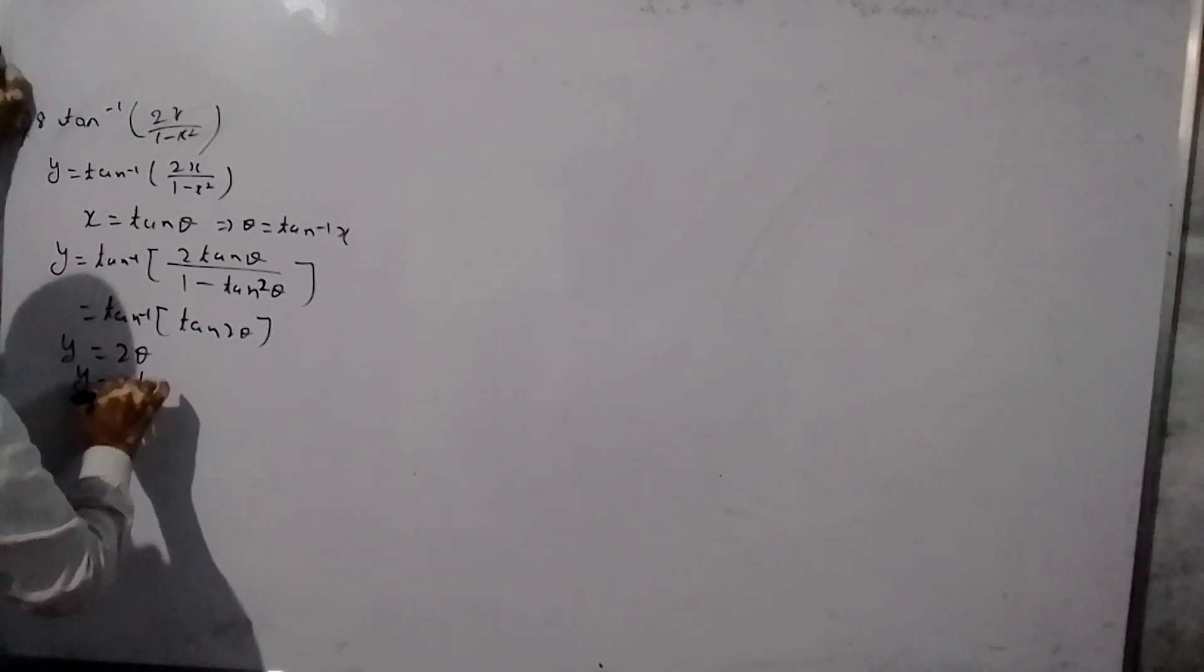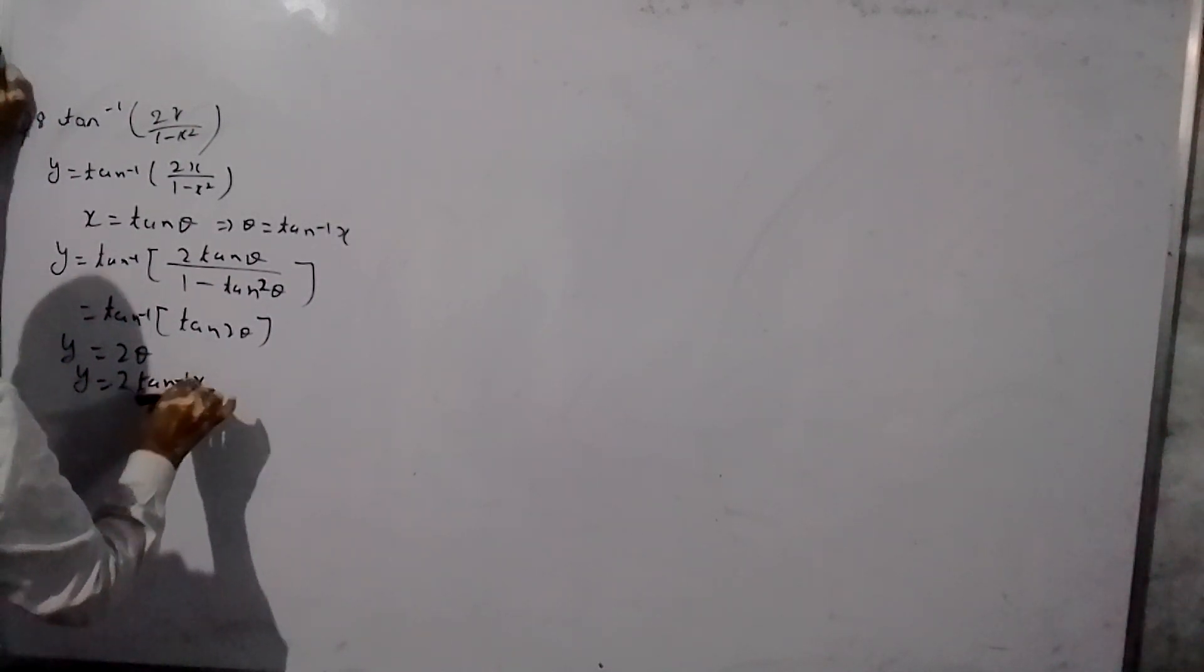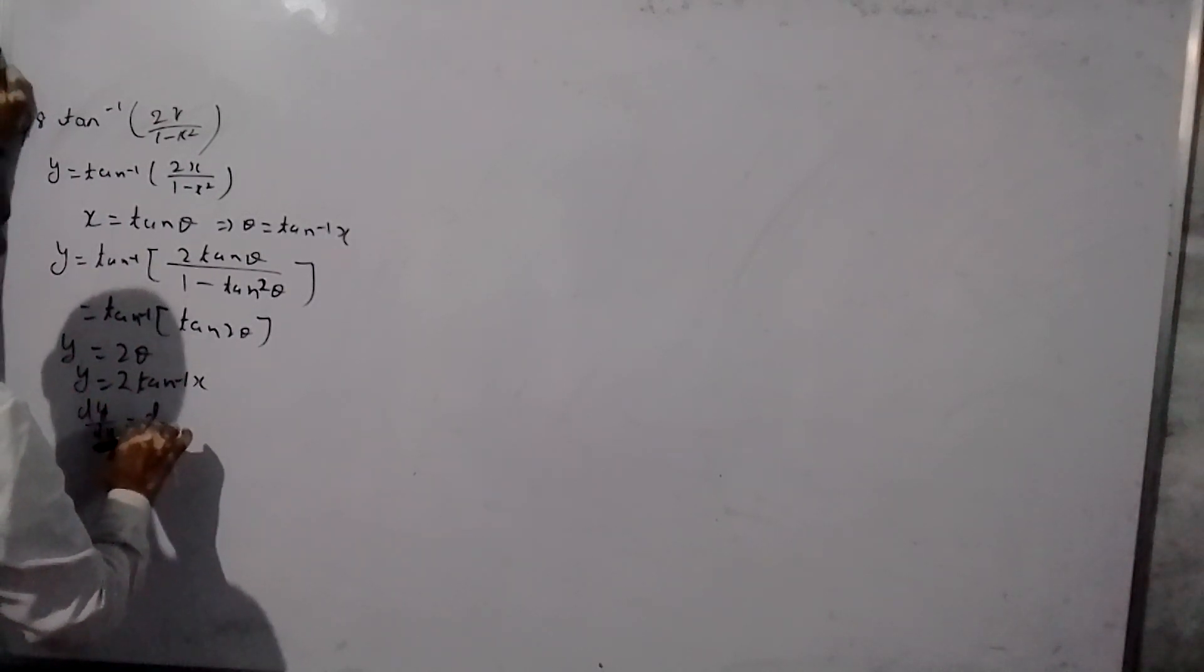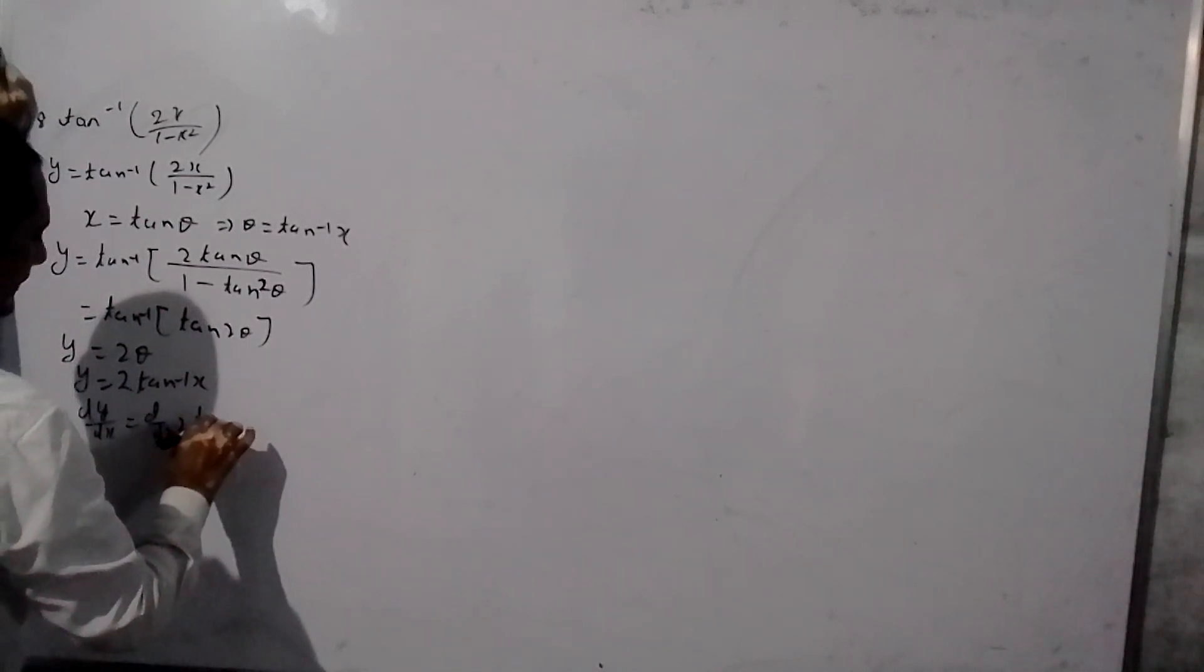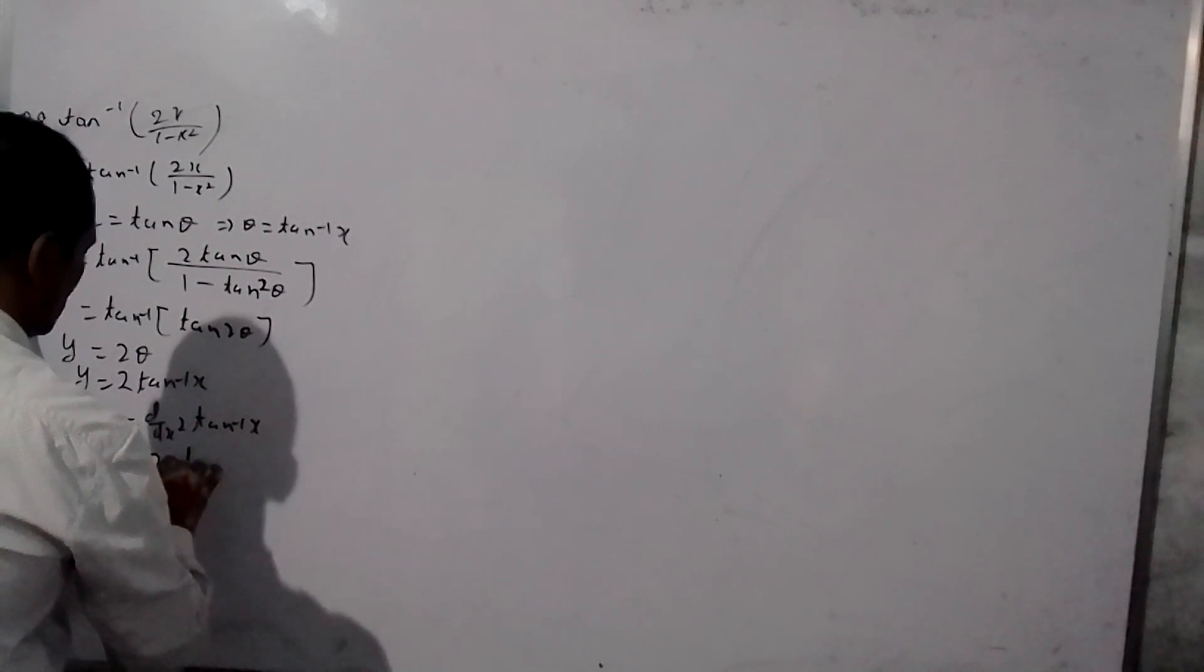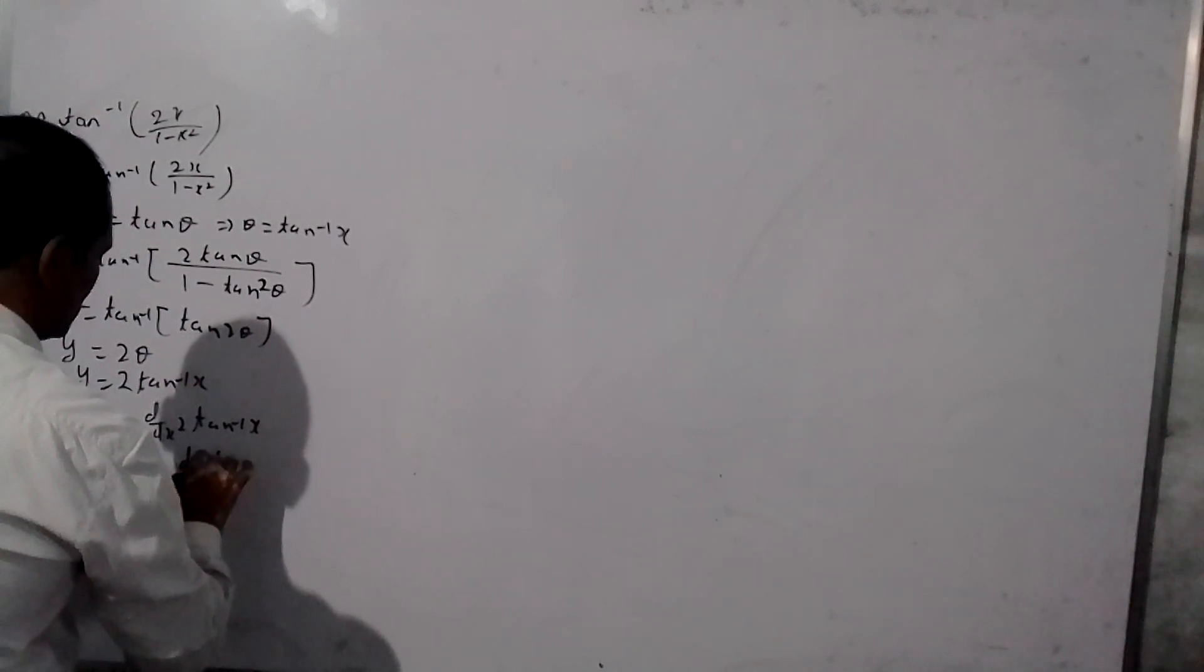How is the differentiation? d by dx of y we have d by dx two tan inverse x. This way, so this is 2 d by dx tan inverse x.